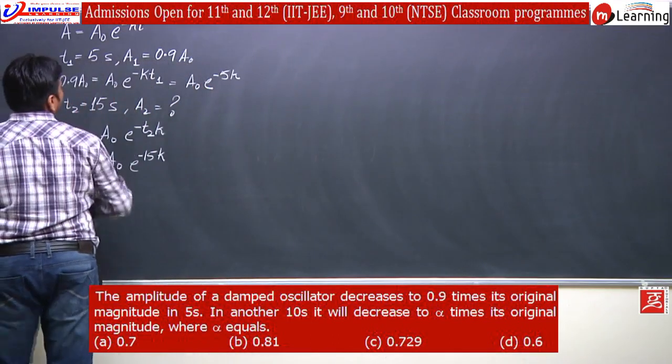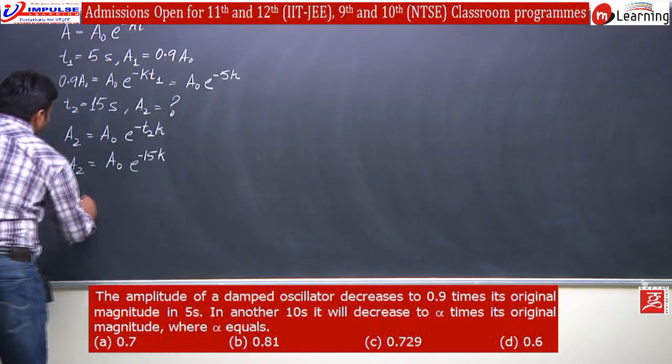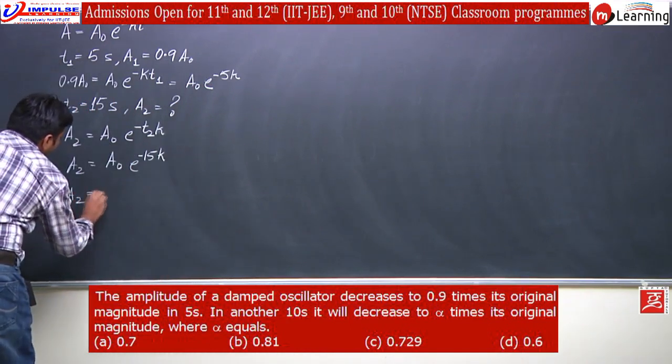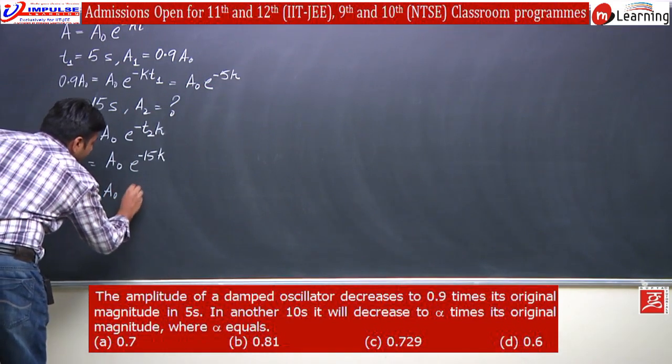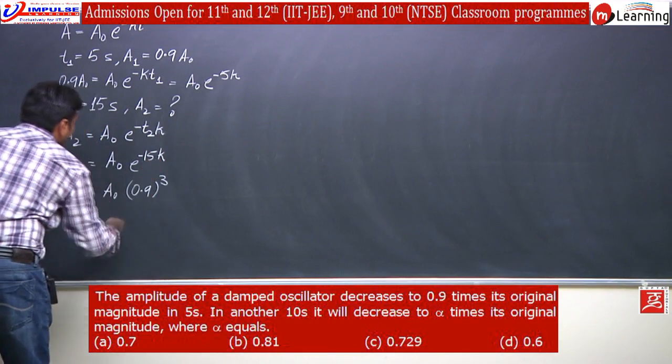The value of this factor we can find from here, it will be 0.9. So, A2 equals A0 times 0.9 to the power 3.